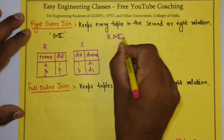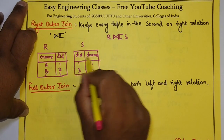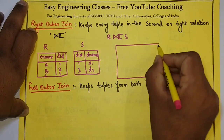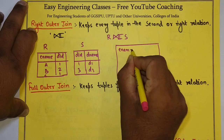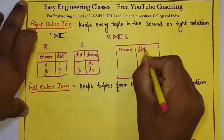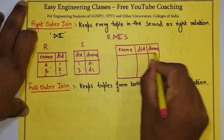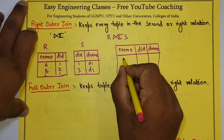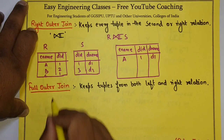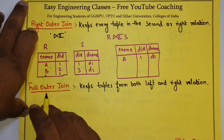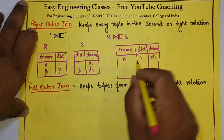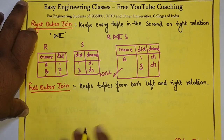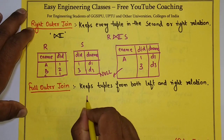Now if I perform right outer join on these two relations, since it is a right outer join, I will get all the values present in the right side relation. The result will have columns: employee name, department id, department name. Employee A has department id 1, which matches. No other values match, so for the remaining tuples from S, the employee name will be NULL.